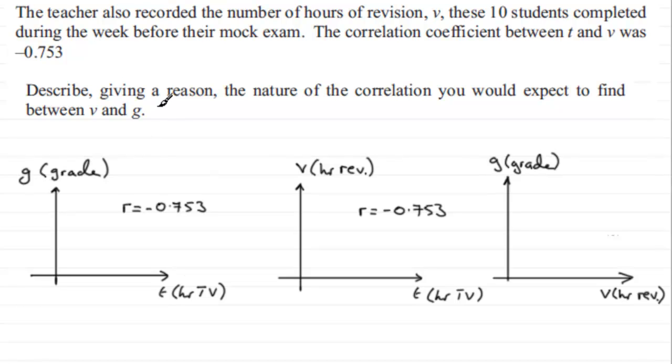Well, what I've done here is just a recap, first of all, of what we found in the previous part. We found that the correlation coefficient between the grade and the hours of TV was negative 0.753, which would indicate negative correlation, something where the points were scattered about a line, something like this. So this would be our line of best fit. Negative correlation.